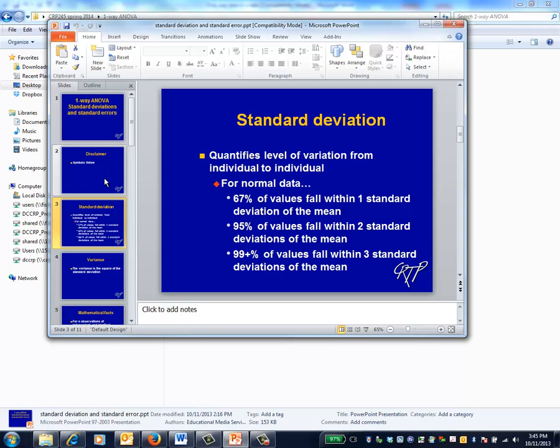Let's start with the standard deviation. Standard deviation quantifies the level of variation from individual to individual within a population. For example, if LDL has a normal distribution with a mean of 140 and a standard deviation of 20, then approximately 67% of patients will have LDL values between 120 and 160, that is within one standard deviation of the mean.